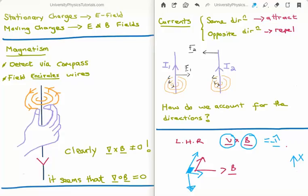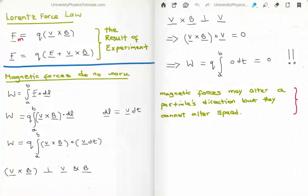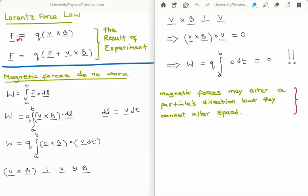To conclude: moving charges, which are currents, constitute the source of a magnetic field. Currents moving in the same direction attract, and currents moving in the opposite direction repel. The Lorentz force law accounts for this, and it states F = Q(V × B). We can also include the electric field, but for the moment we leave that out. And magnetic forces do no work. Thanks for watching — please pass it on to your friends, subscribe to my channel, and leave a comment below.